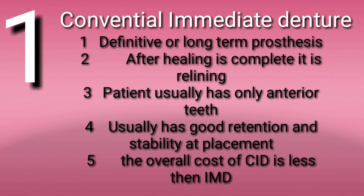Types of immediate denture. Number one: conventional immediate denture. Properties of conventional immediate denture — number one: definitive or long-term prosthesis; number two: after healing is complete, it is relined; number three: patient usually has only anterior teeth; number four: usually has good retention and stability at placement; number five: the overall cost of conventional immediate denture is less than interim immediate denture.